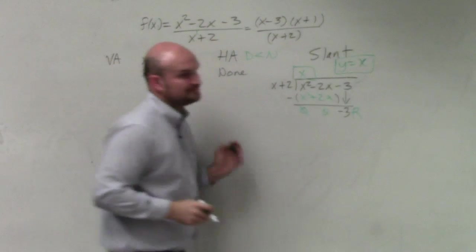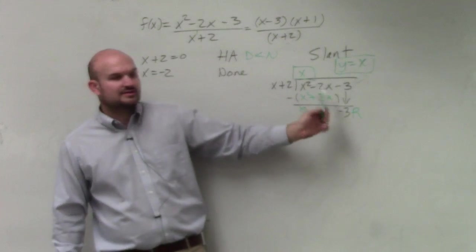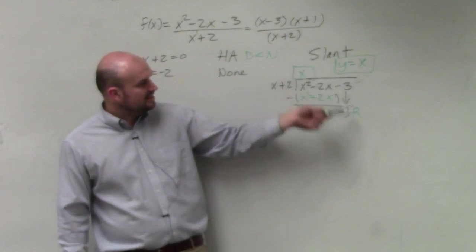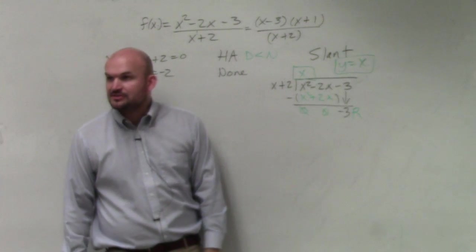That's your answer. It doesn't matter if there's a remainder or not. The remainder doesn't affect what your asymptote is, because that actually approaches 0. So therefore, it's just going to be x is your slant asymptote.